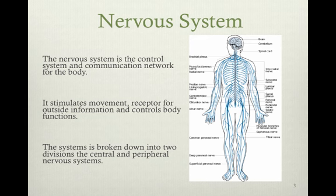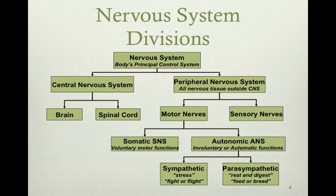The central nervous system houses the brain and spinal column, and the peripheral nervous system is the nervous system outside of the brain and spinal column, with several divisions that we'll talk about.